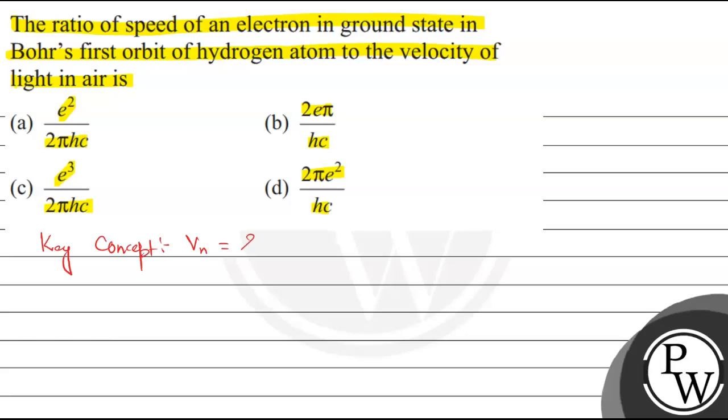We know velocity in nth orbit is equal to 2πkZe²/(nh), where Z is the atomic number.